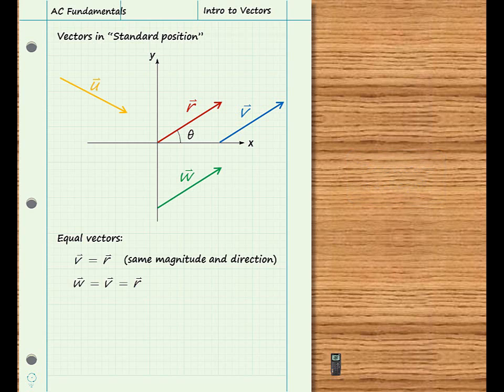Vector U has the same magnitude as vectors R, V, and W, but it is not equal to these three vectors because it has a different direction.